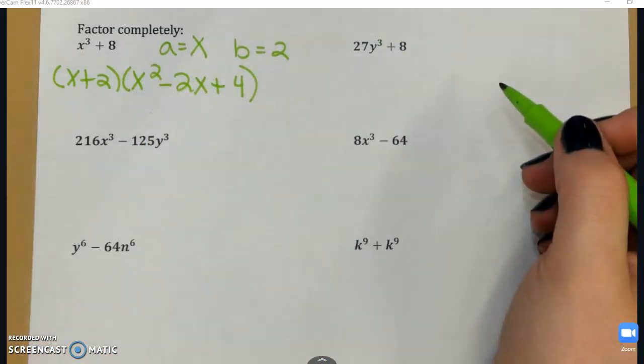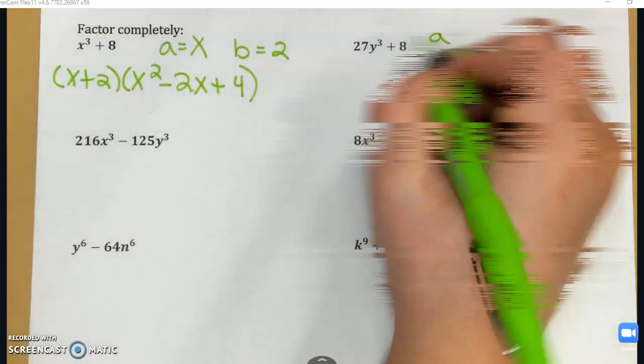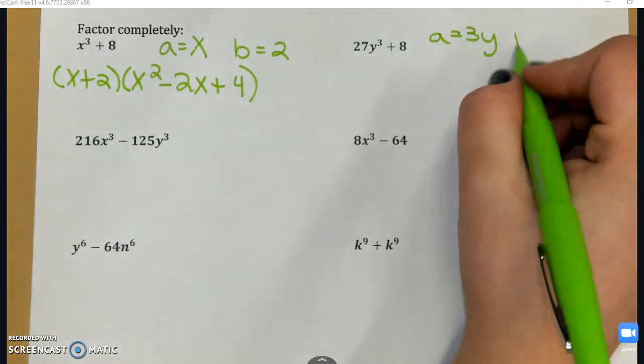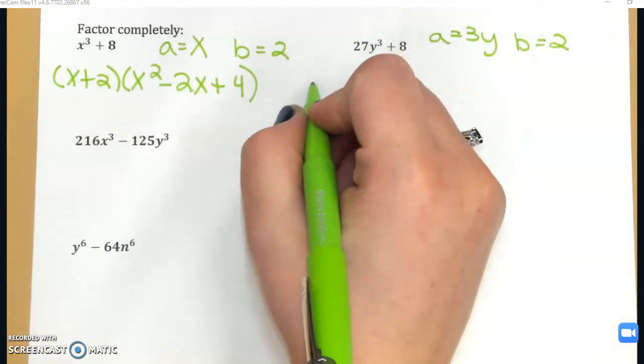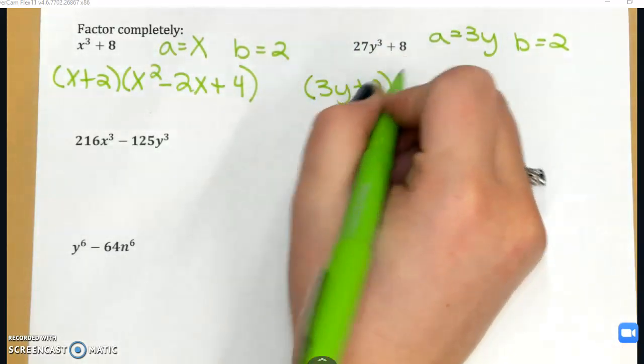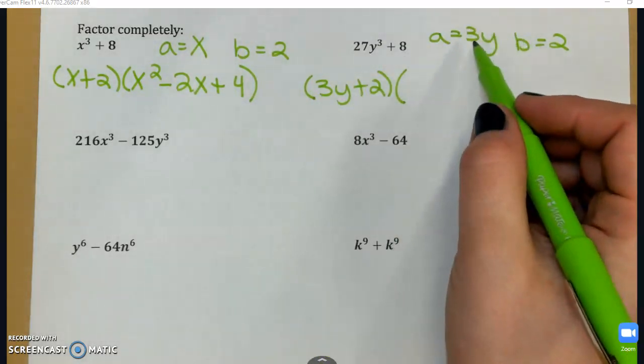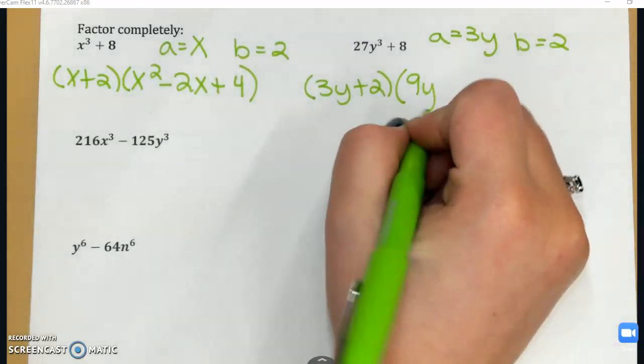Let's look at the next one. 27y³ + 8. Identify a and b. a is going to be 3y, and b, the cube root of 8, is 2. Again, this is the sum of two cubes. So my factorization is going to be (3y + 2) times a². Now if I square 3y, that means I have to square both the coefficient and the variable. So that's going to be 9y².